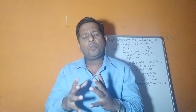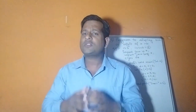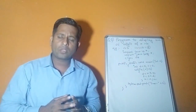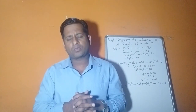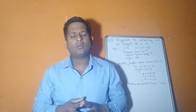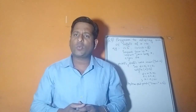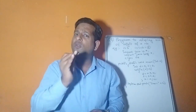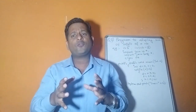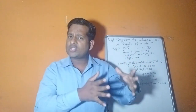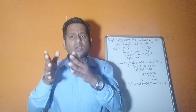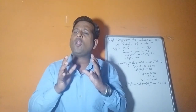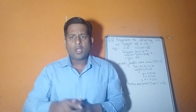While loop is also an entry-controlled loop like for loop — that means the condition is checked first, then statements are executed. Whenever you get a digit-based question, use a while loop. The reason is that in a while loop we give only one condition, whereas in a for loop we give three: initialization, condition, and number of steps.